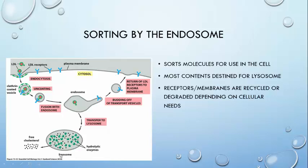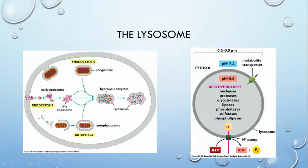Most of the contents of the endosome is destined for destruction within the lysosome. The lysosome is the final destination for all items that need to be digested in the cell. All three endocytic pathways end at the lysosome. These compartments are very acidic, usually around pH 5, and contain a large amount of enzymes that help break down all of these molecules into usable building blocks. To maintain the strongly acidic environment, the lysosome utilizes a hydrogen pump to pump hydrogen ions into the organelle.